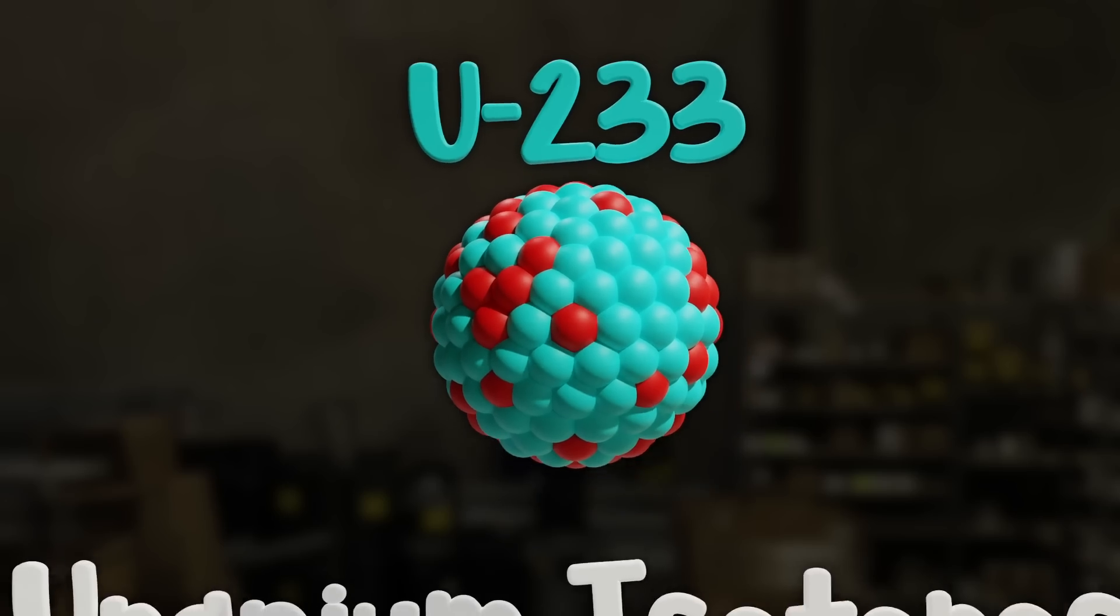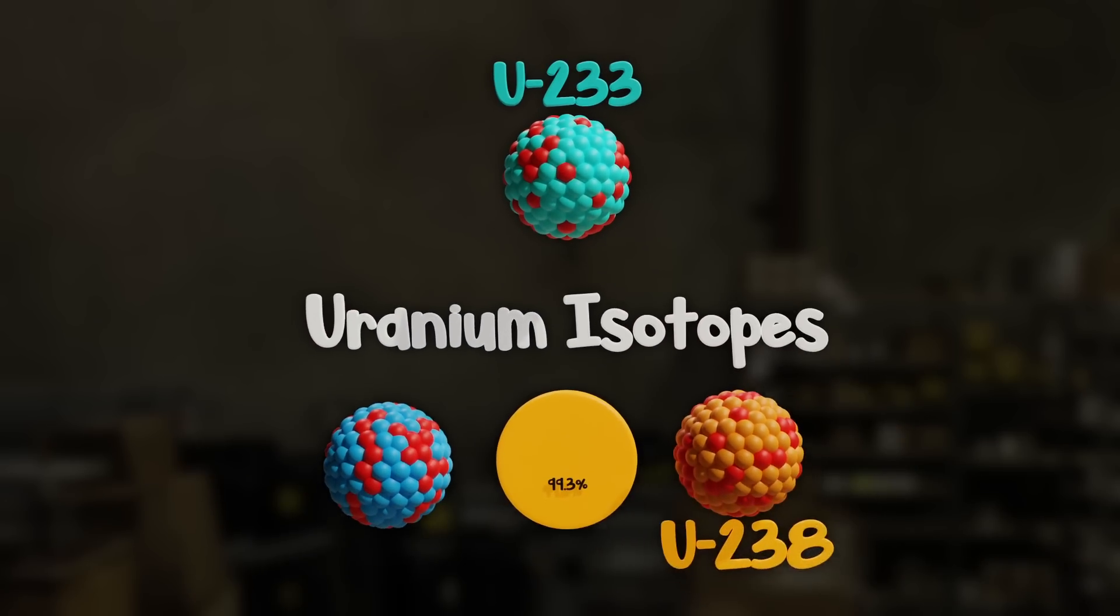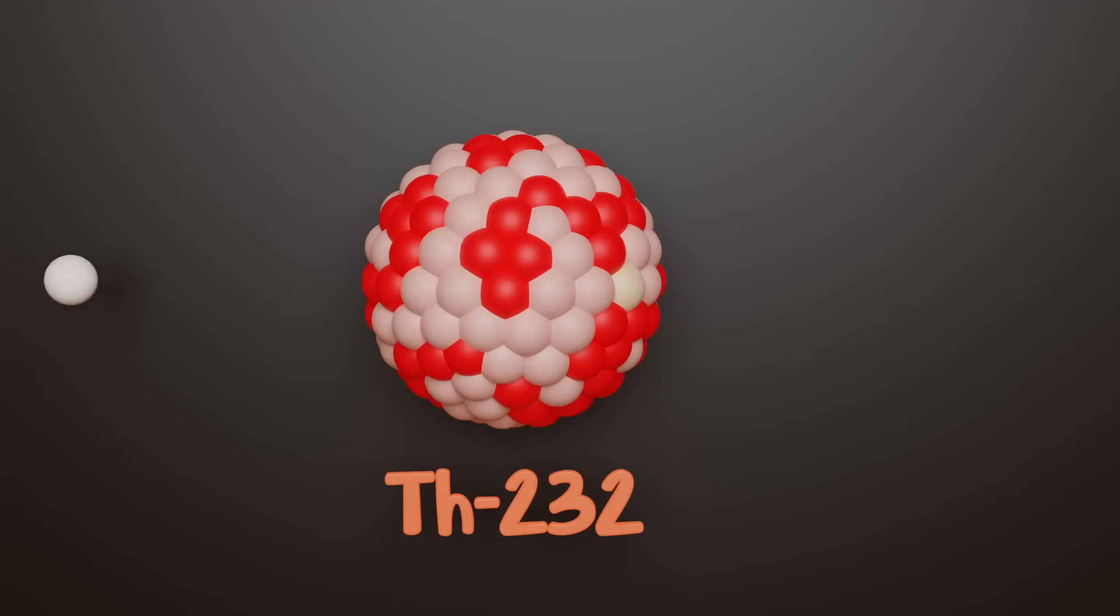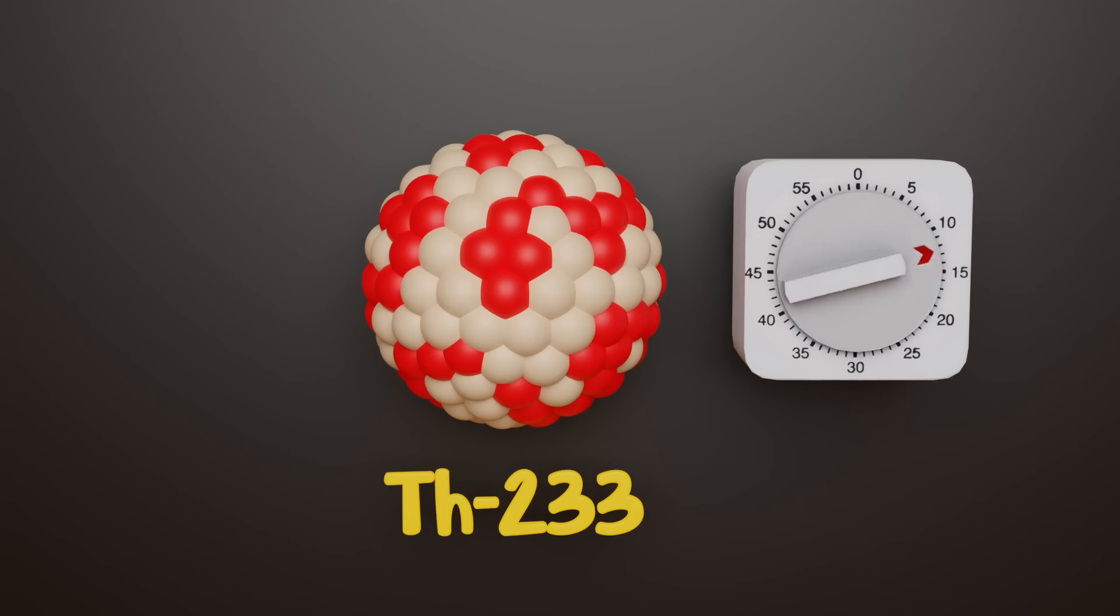But this isotope doesn't exist in nature; it must be created. This can be accomplished when a naturally occurring thorium-232 atom absorbs a thermal neutron. After absorption, it transmutes into thorium-233 with a half-life under 30 minutes, causing a beta decay into protactinium-233.